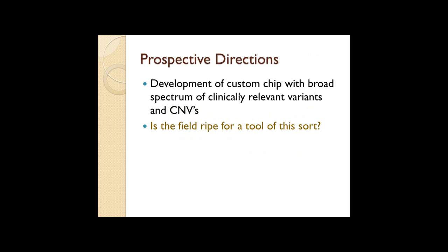Regarding prospective directions, Halken presented the concept of a custom chip with a bi-spectrum of clinically relevant variants and CNVs, with a question about whether the field is ripe for a tool of this sort. How would this impact the nature of testing and return of results, and the other types of issues that the network has been grappling with?